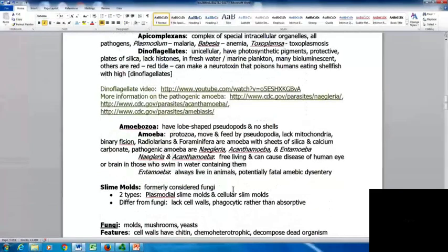The Amoebozoa have lobe-shaped pseudopods and no shells. Amoeba are protozoa that move and feed by pseudopodia, lack mitochondria, and divide by binary fission. The radiolarians and foraminifera are amoeba with shells of silica and calcium carbonate. Pathogenic amoeba include Naegleria and Acanthamoeba, also Entamoeba. Naegleria and Acanthamoeba are free-living in water and can cause disease of the human eye or brain in those who swim in water containing them. It is pretty rare to see infections though.